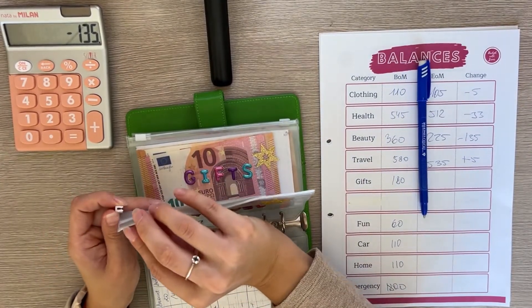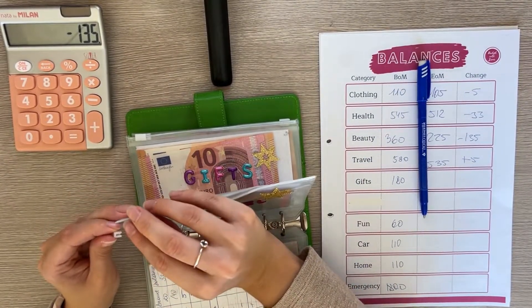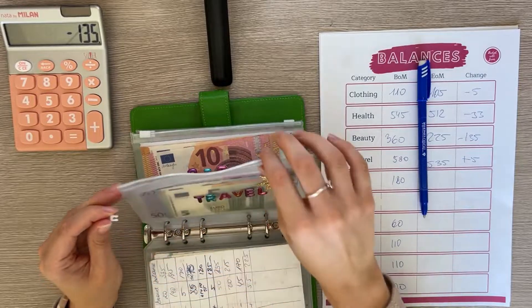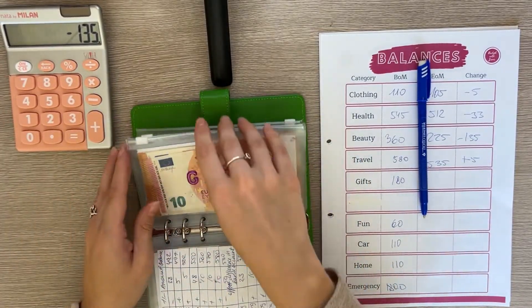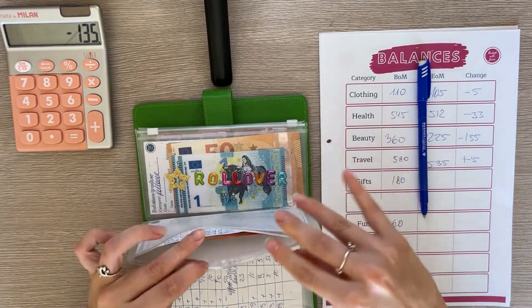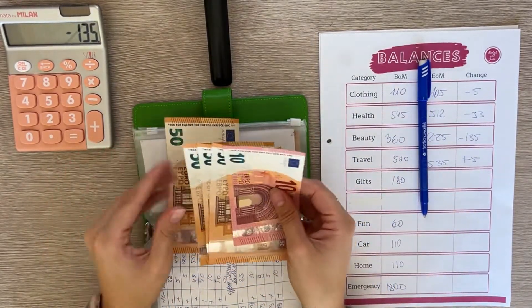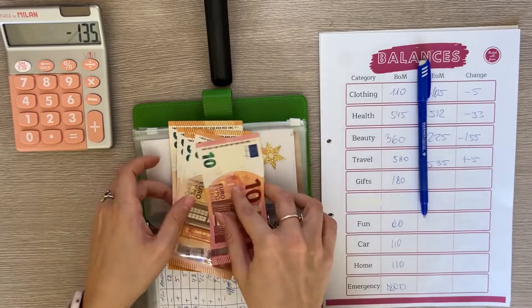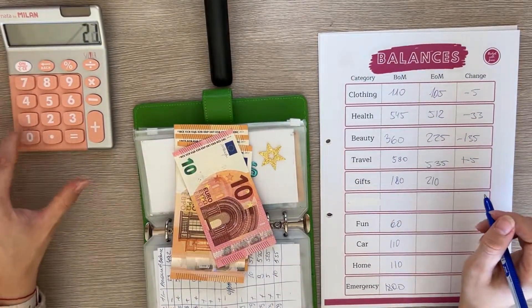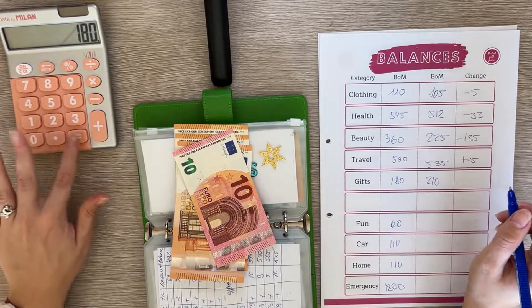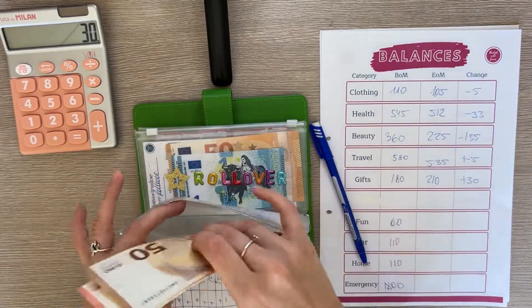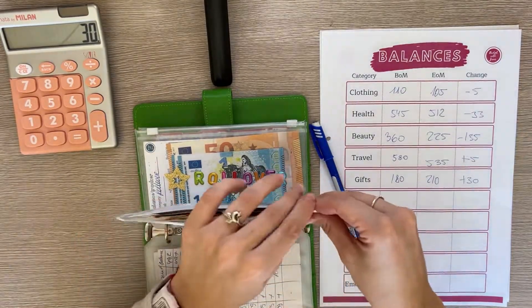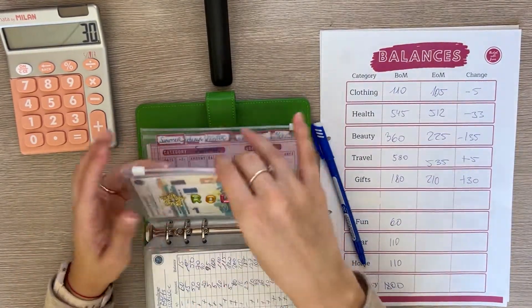Next is travel and travel has $535 and it had $530 but I did spend during the month so it kind of evened out. That's a positive five difference. Gifts is next and gifts have $210, that's a positive 30 difference.